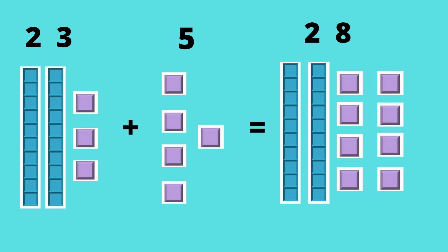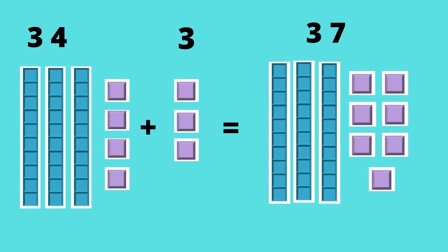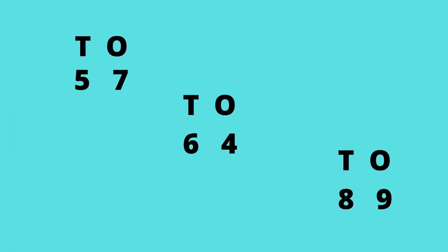Similarly, when we add 34 and 3, we add all ones together, and it will be 37. Now you are clear about ones and tens.